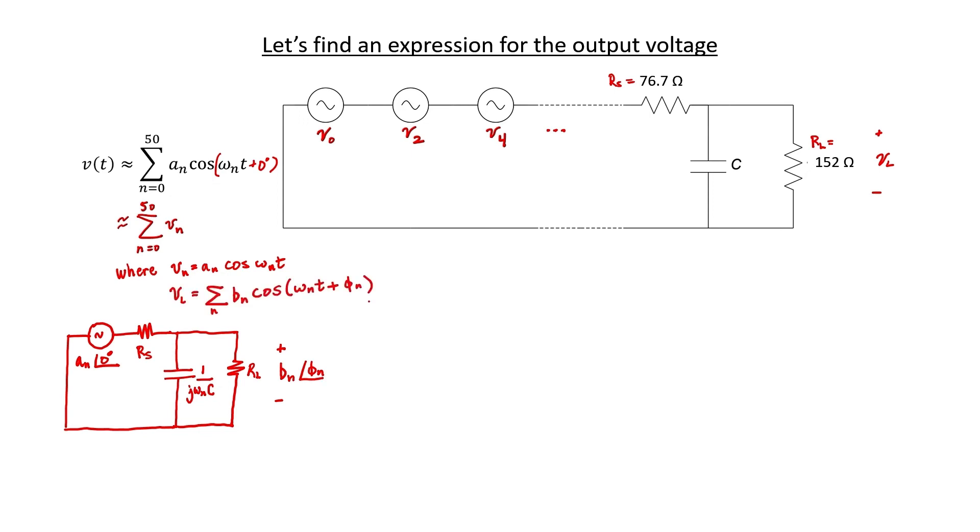In other words, this will be the time domain expression for our output voltage. We can use voltage division to actually find the expression of this output voltage per source.